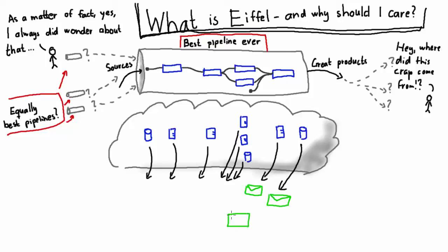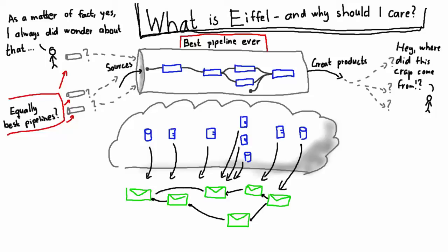Every event is globally broadcast on a message bus shared by these microservices. Every event is a small concise thing in itself, but it references other previous events using explicit links — such as why did this event occur, in what context did it happen, what was the item under test, what was the build environment. Together these events form a directed acyclic graph of everything that's going on in your continuous integration and delivery pipeline in real time.